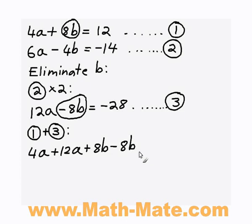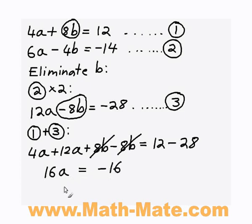So now I can simplify this, so 4a plus 12a is going to equal 16a. Now, positive 8b and negative 8b are going to cancel out, so I'm just going to have no b's left. The other side, I've got 12 minus 28, which becomes negative 16. So if 16a equals negative 16, a must equal negative 1.